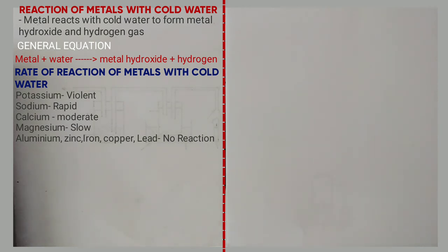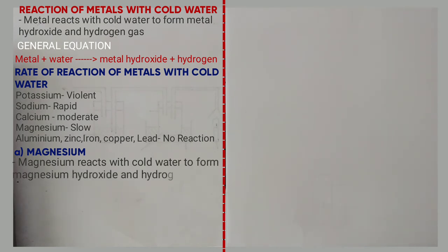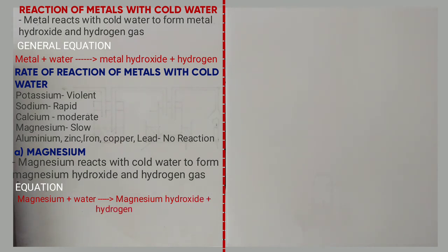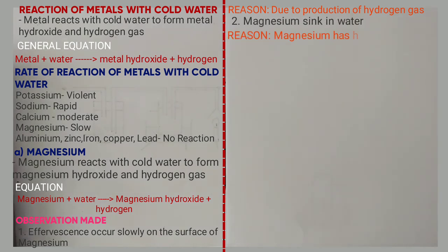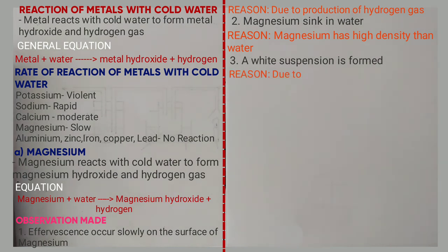Now we look at the discussion of the following metals. A. Magnesium. Magnesium reacts with water to form magnesium hydroxide and hydrogen gas. Equation: Mg + H₂O → Mg(OH)₂ + H₂. The nature of the solution formed is basic. Observations when a piece of polished magnesium is dropped in water: 1. Effervescence occurs slowly on the surface of magnesium — due to production of hydrogen gas. 2. Magnesium sinks in water — because magnesium has higher density than water. 3. A white suspension is formed — due to formation of slightly soluble magnesium hydroxide.